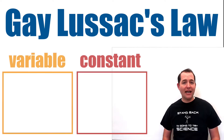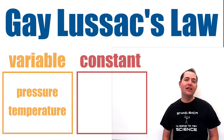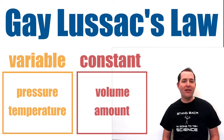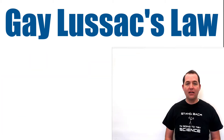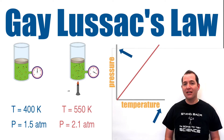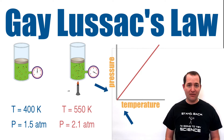Gay-Lussac's law is a gas law that relates pressure and temperature. When we keep volume and the amount of gas constant, pressure and temperature are directly proportional. As the temperature of a gas increases, so does its pressure, and if we decrease the temperature of a gas, its pressure will also go down.